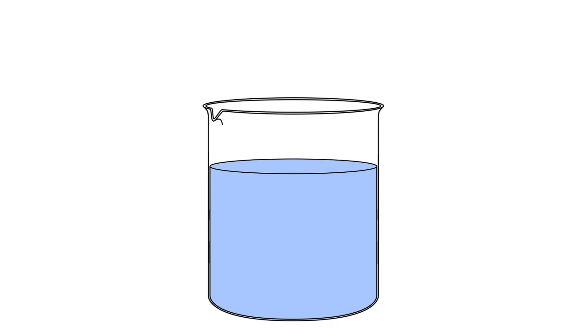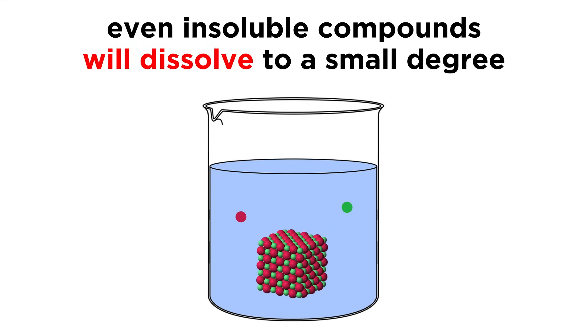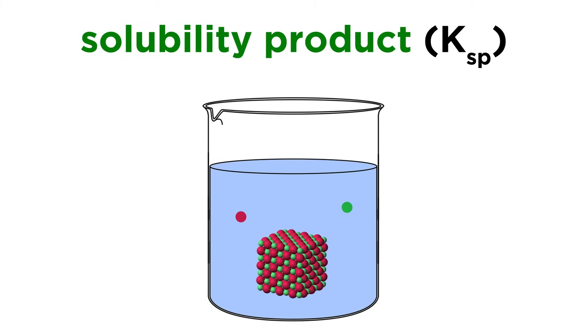It's true that many ionic compounds are completely soluble, but the reality is that even the ones that we call insoluble will dissolve to a minuscule degree. Whatever the degree to which dissolution occurs for a particular substance, we can communicate this using the solubility product, abbreviated as Ksp.